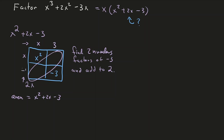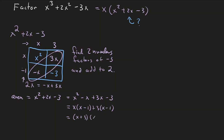With 3 and minus 1 in the remaining spots, we get 3x and minus x in the interior boxes, so 2x splits as minus x plus 3x. Expanding: x squared minus x plus 3x minus 3. Grouping gives x(x minus 1) plus 3(x minus 1), which factors as (x plus 3)(x minus 1). So the final answer is x(x plus 3)(x minus 1), and that is how to use a factor square to factor a quadratic.